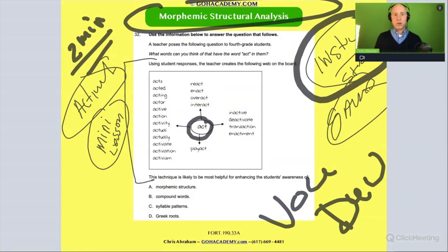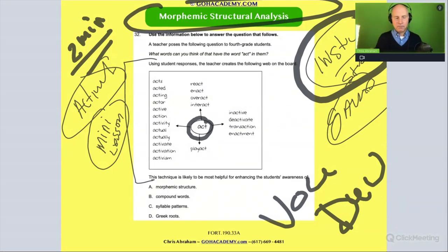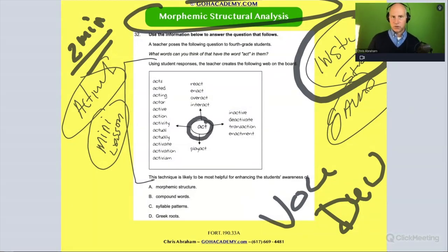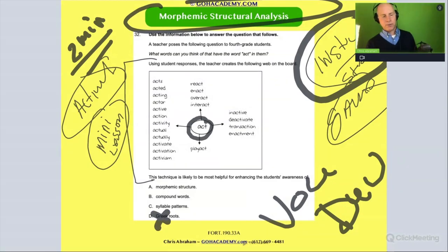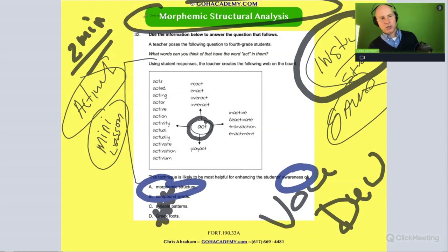In your essays, they'll ask you to identify a strength and area of need, and they'll want you to write an instructional strategy — this is an example of one. This is a structural strategy. It's not about Greek roots or syllable patterns or compound words; there are no compound words here. This is all about building a student's awareness of morphemic structure — looking at a word and seeing the parts that carry meaning: prefix, base, suffix.